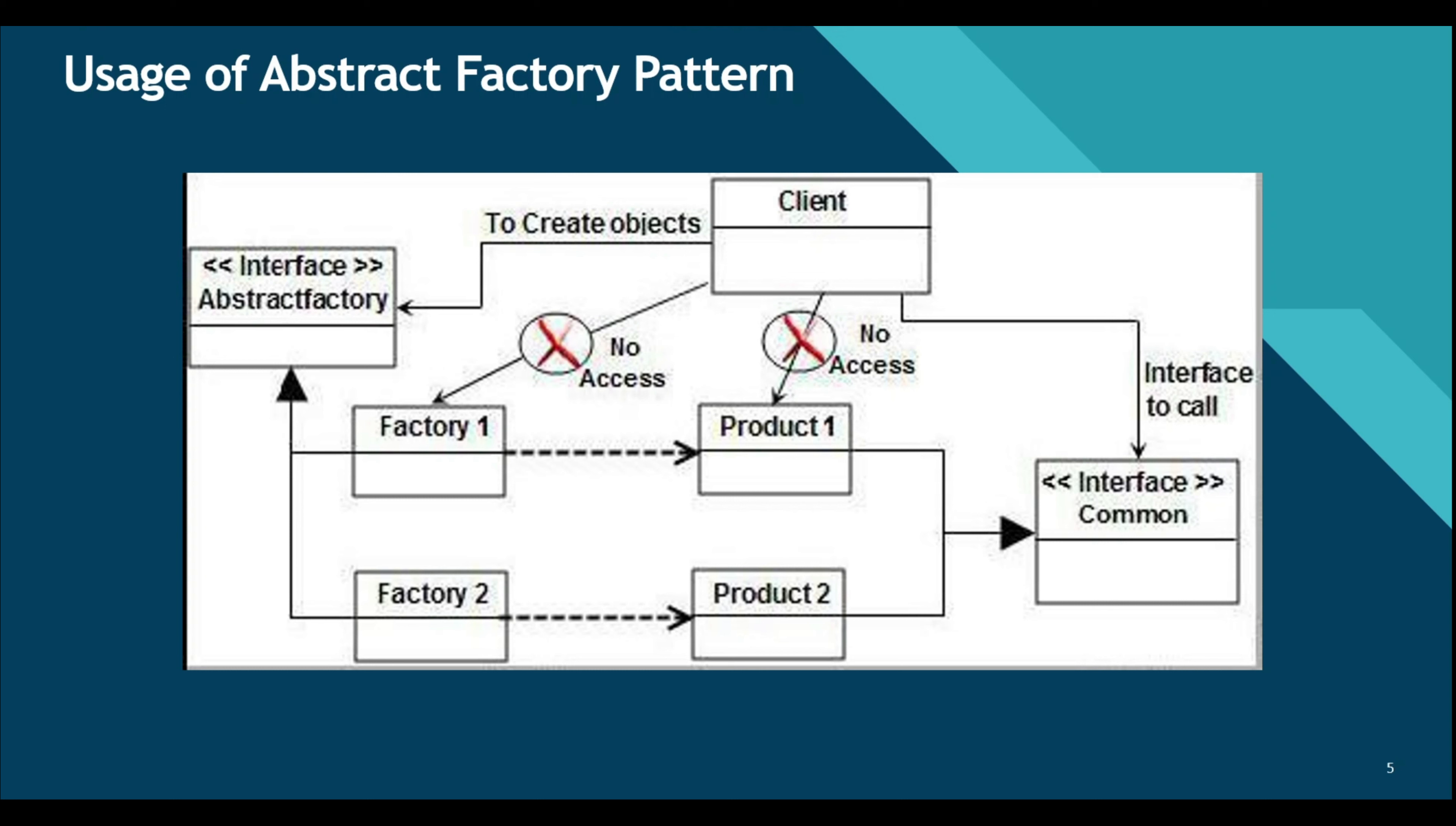Okay, so let's try to understand the details of how abstract factory pattern can be implemented through this diagram. We have the factory pattern classes, factory one and factory two. Here in the middle of the diagram you see factory one class and factory two class. These are tied up to a common abstract factory class. So both factory one and factory two are implementing a common interface that is abstract factory.